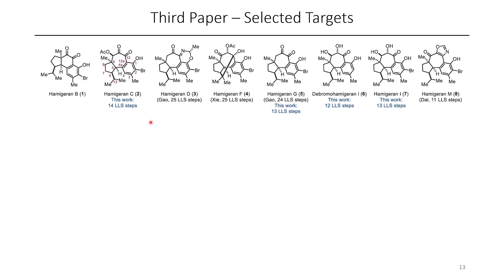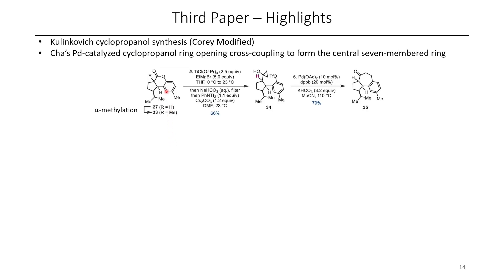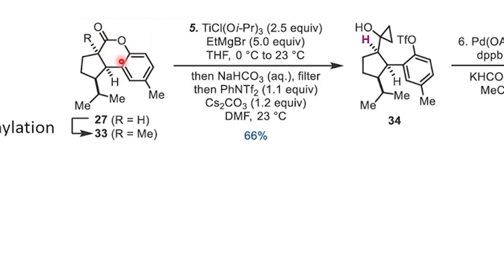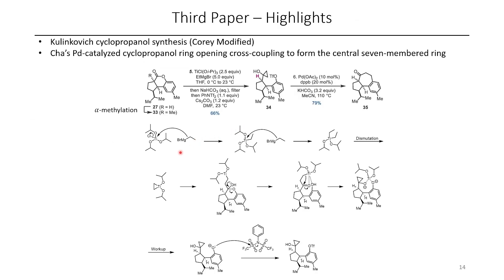Among the different Hamagueran natural products that exist, the authors decided to target four of them. We're just going to highlight a couple of interesting steps worth noting. The first reaction: they take a sterically unhindered lactone 27, and by doing the Kulinkovich reaction, they were able to put a cyclopropanol where the carbonyl of the lactone was, and in the same pot in a second step, they treat this with bis-trifluorosulfonyl aniline, which triflates the corresponding phenol into a triflate.